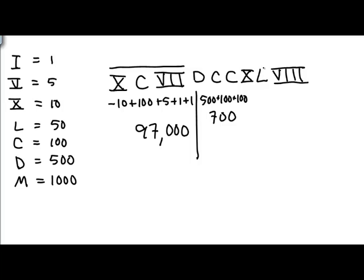And then the X before the L is a minus 10, and a 50. So that is a 40. And then the VIII is 5, plus 1, plus 1, plus 1 is 8. So 748 for a grand total of 97,748.